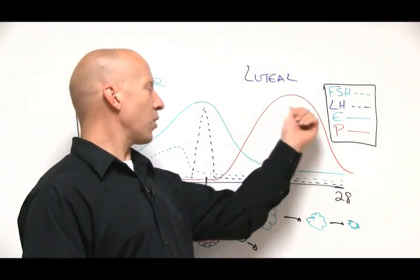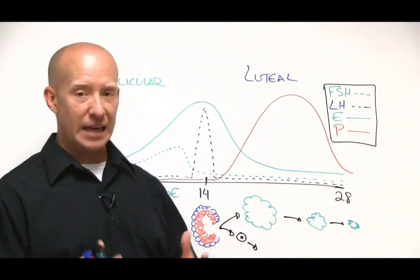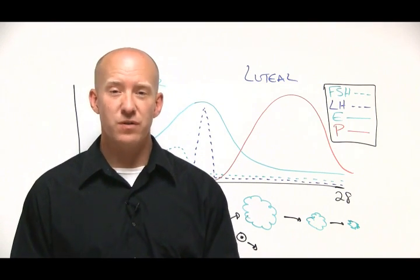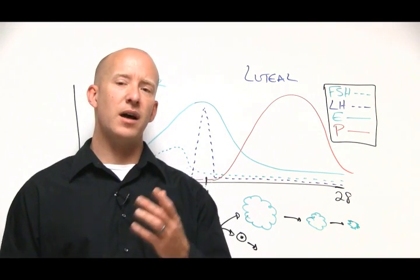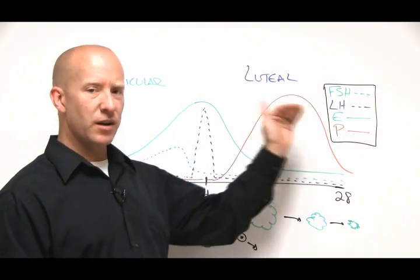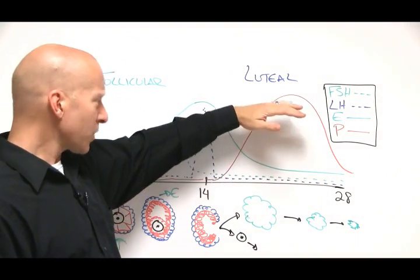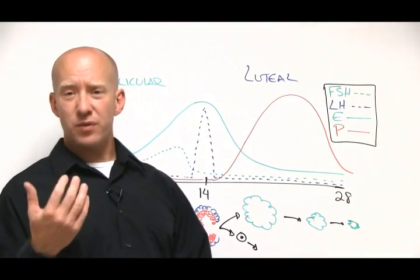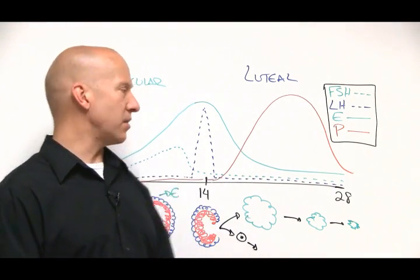The next major phase is progesterone production. And again, if we're talking about low progesterone, which a lot of women do suffer from today, a lot of women have what's called estrogen dominance. And estrogen dominance, if it's not being cleared out of the liver primarily, will cause a suppression in progesterone and a number of symptoms, having a difficult time getting pregnant and those types of things.